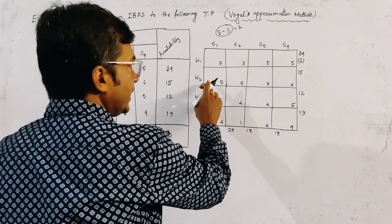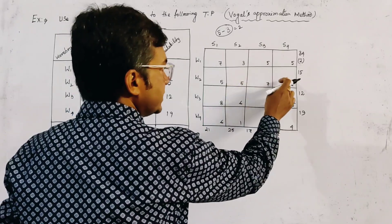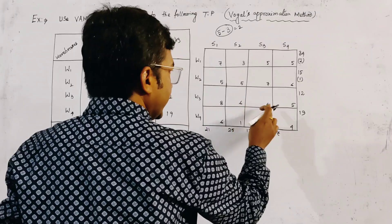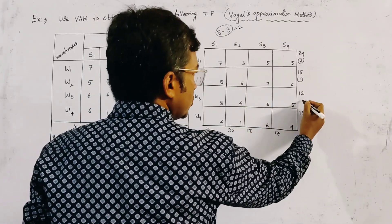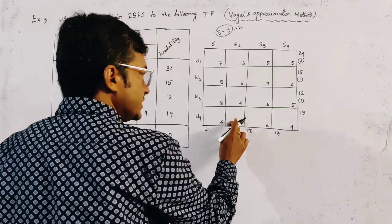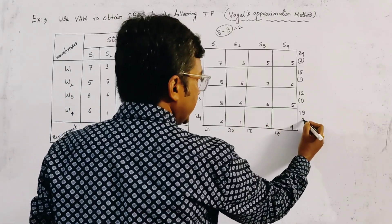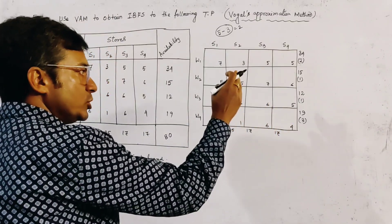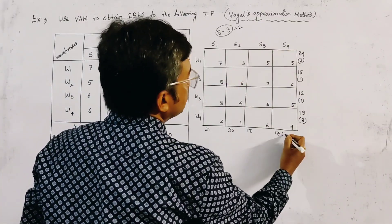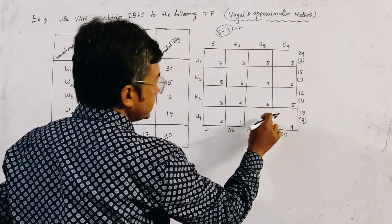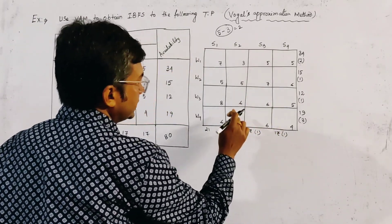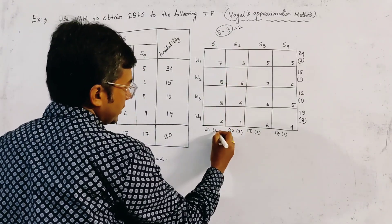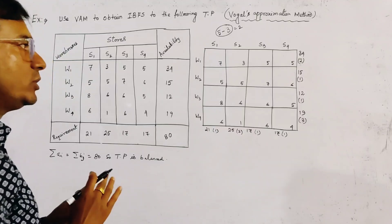Similarly, for the second row the lowest cost is 5 and the next is 6, so the penalty is 1. For the third row, lowest is 5 and next is 6, penalty is 1. For the fourth row, lowest is 1 and next is 4, so the penalty is 3. For the columns, penalties are: first column 4 and 5 gives 1; second column 6, 5, 6 gives 1; third column 1 and 3 gives 2; fourth column 6, 5, 6 gives 1. So we calculate all the penalties.